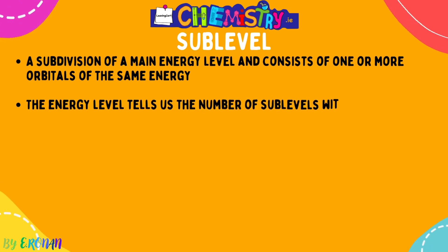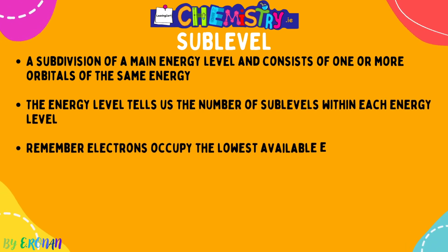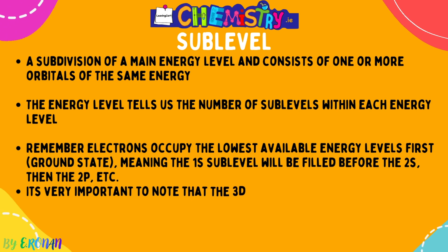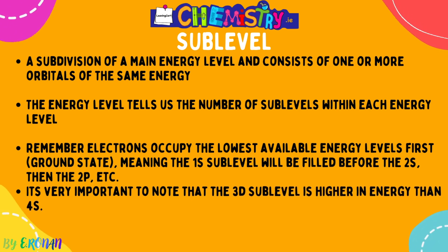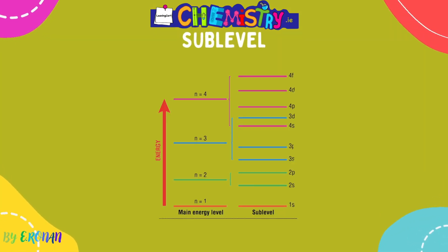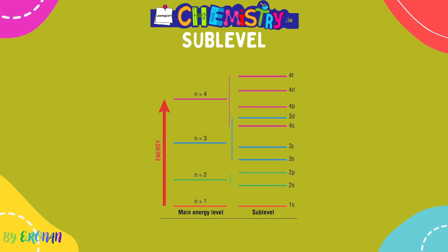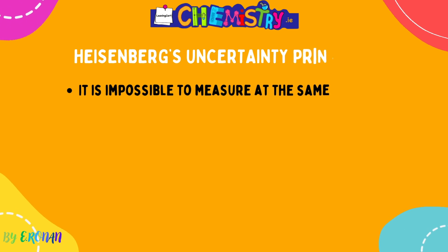Sub levels are subdivisions of a main energy level and consist of one or more orbitals of the same energy. The energy level number tells us the number of sub levels within it: n=1 has one sub level, n=2 has two. It is very important that you fill the 4s sub level before the 3d, because 4s is lower in energy and must be filled first. Knowing the main energy levels and how many sub levels they contain is essential for writing electronic configurations, which you also encounter in the periodic table chapter.